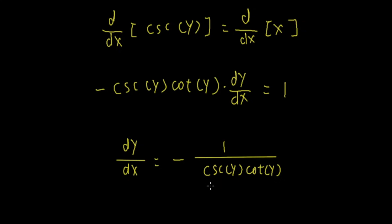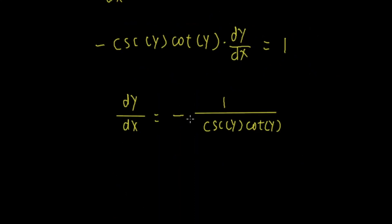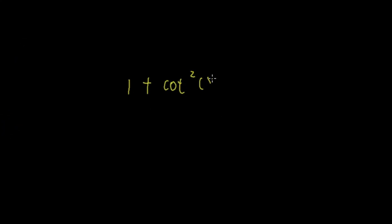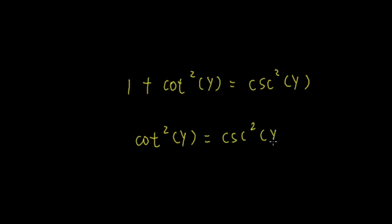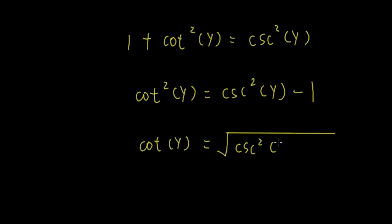So how do we write this? First, cosecant y we know from the beginning is equal to x. But how about cotangent y? We use the trigonometric identity: 1 plus cotangent squared y equals cosecant squared y. Isolating cotangent squared y by subtracting 1 from both sides gives cotangent squared y equals cosecant squared y minus 1. Taking the square root of both sides, cotangent y equals the square root of cosecant squared y minus 1.